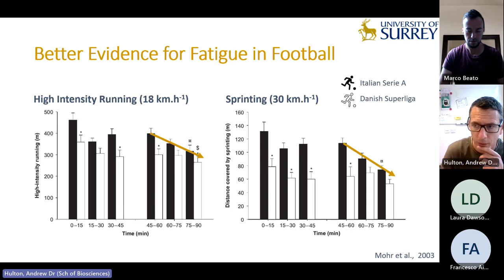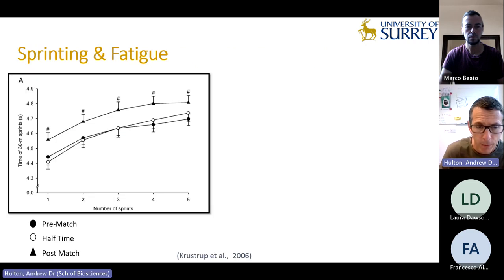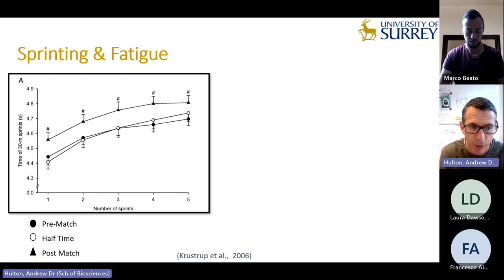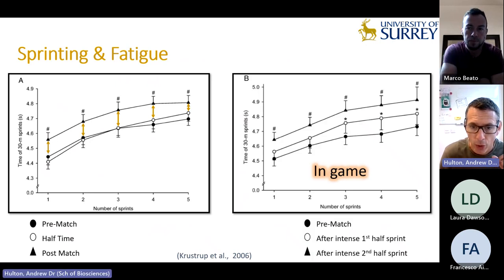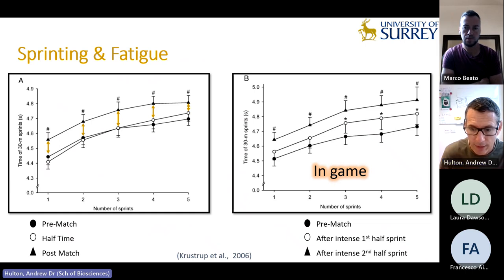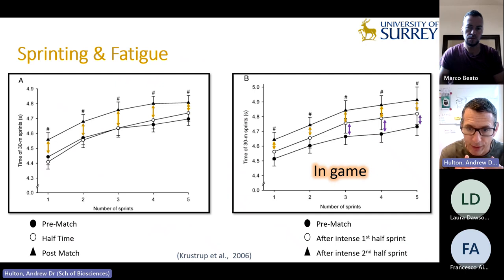In a more controlled environment, Peter Krustrup's work in a friendly match looked at sprinting at the beginning of the game, at half time, and at the end. They found a reduction in sprint ability at end of game compared to pre-match and half time. Within the game, looking at pre-game, first-half intensity, and second-half intensity, there are significant differences between pre-game and the second half — clear evidence for fatigue.